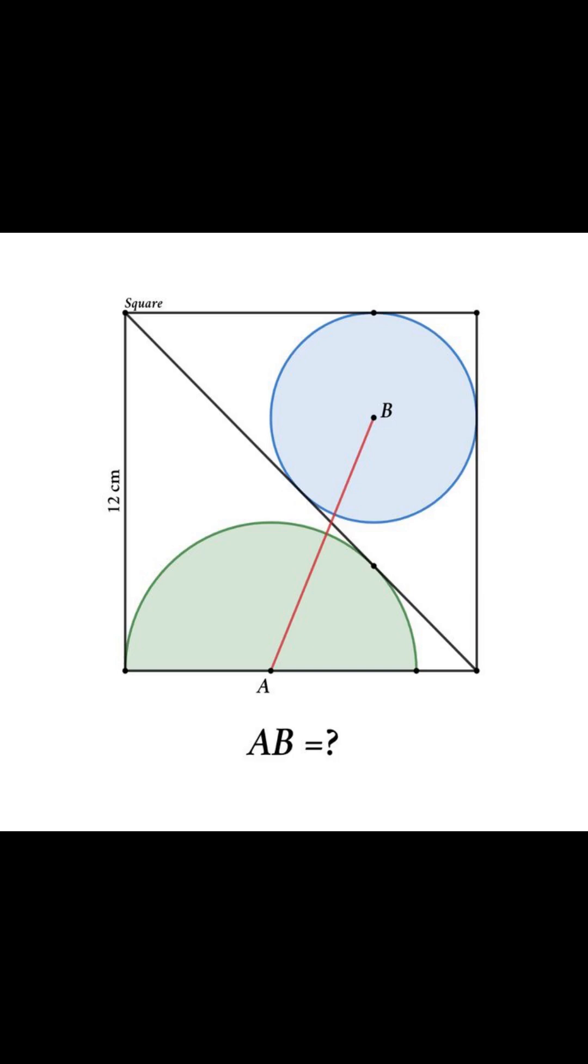All right, what's going on guys? Here is your daily dose of challenge on Prime Logic. Inside a 12 centimeter square, there is a semicircle at the bottom and a full circle tangent at the top.